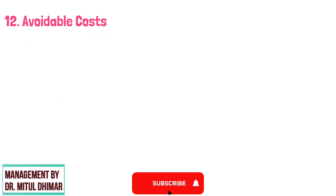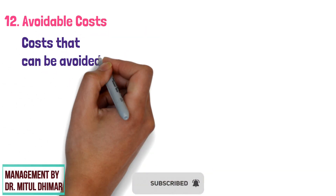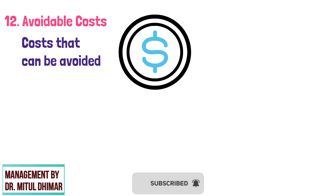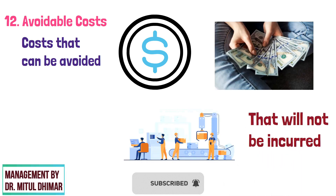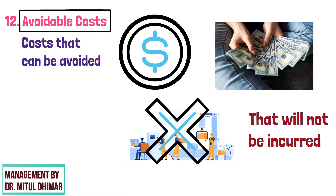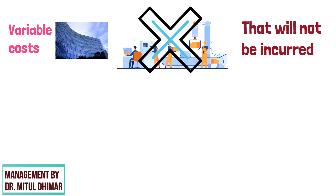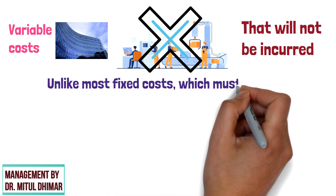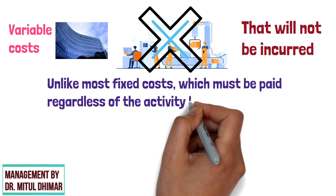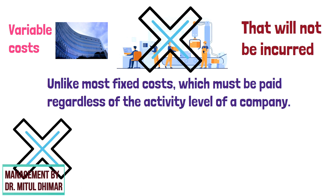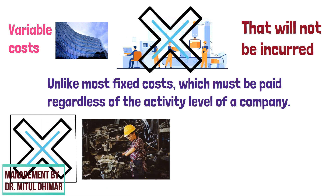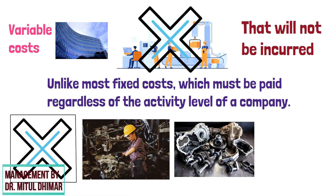Number 12: Avoidable Cost — cost that can be avoided. An avoidable cost is an expense that will not be incurred if a particular activity is not performed. Avoidable costs refer primarily to variable costs that can be removed from a business operation, unlike most fixed costs which must be paid regardless of the activity level of a company. For example, if you stop producing cars, you don't have to pay for extra raw materials and electricity.